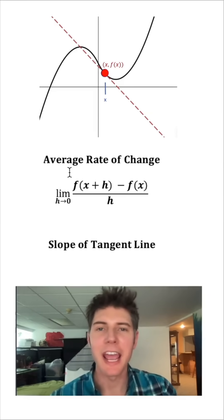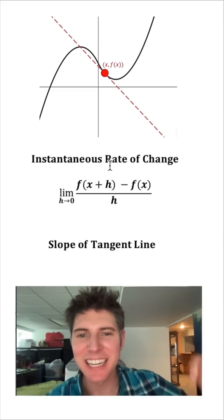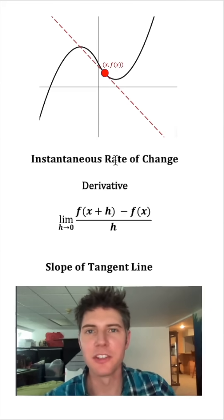So this is no longer an average rate of change because there's no two points for it to be an average for. This is an instantaneous rate of change. It's how fast it's changing at that instant. Another name we have for this is the derivative.